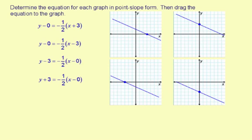We're going to use a common-sense approach to this problem. Notice that all the slopes are the same here, negative one-half. And all the slopes are the same on these graphs, too.